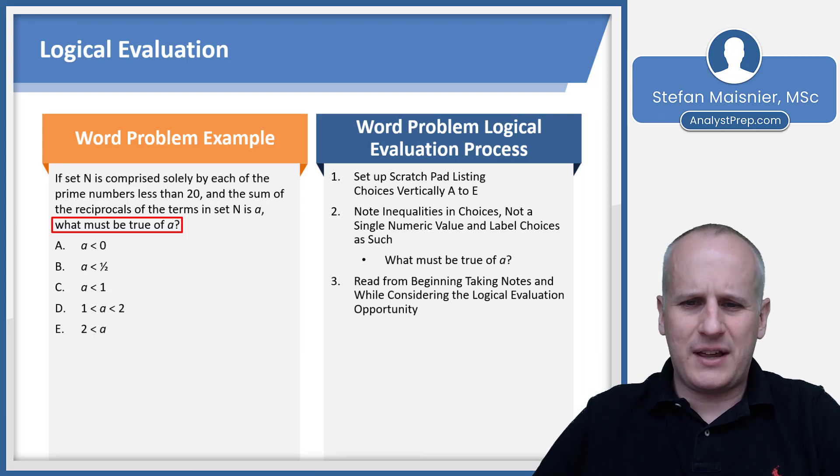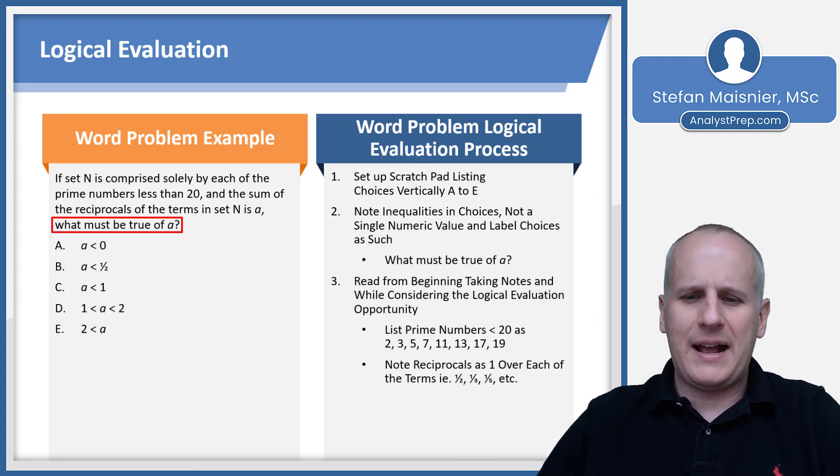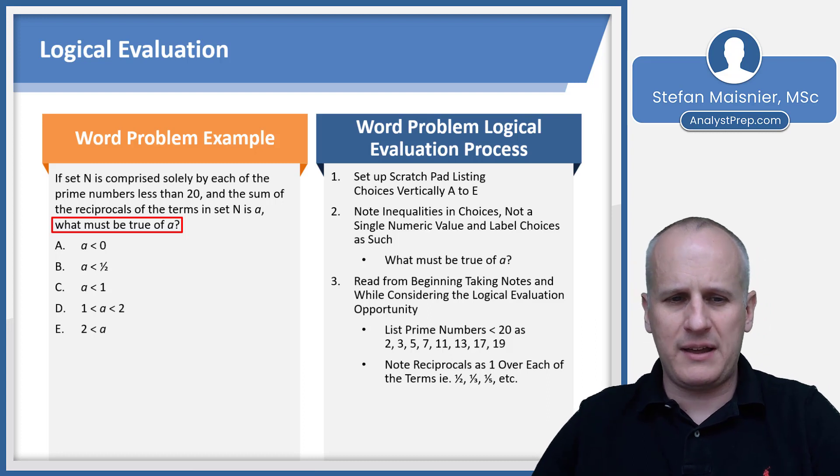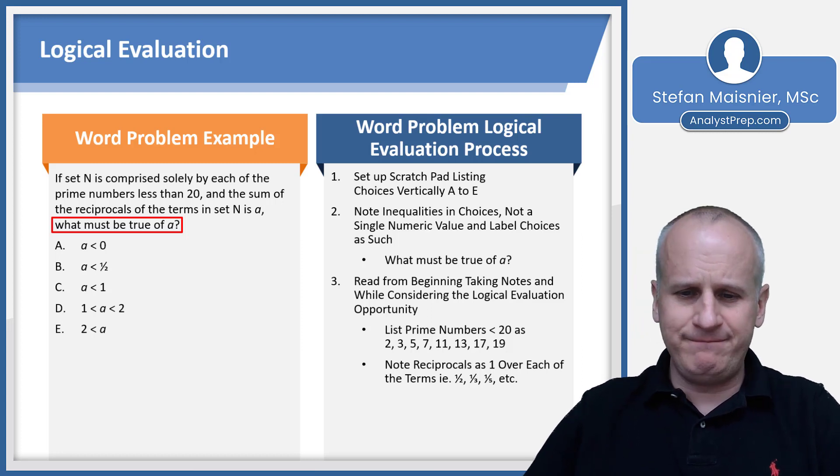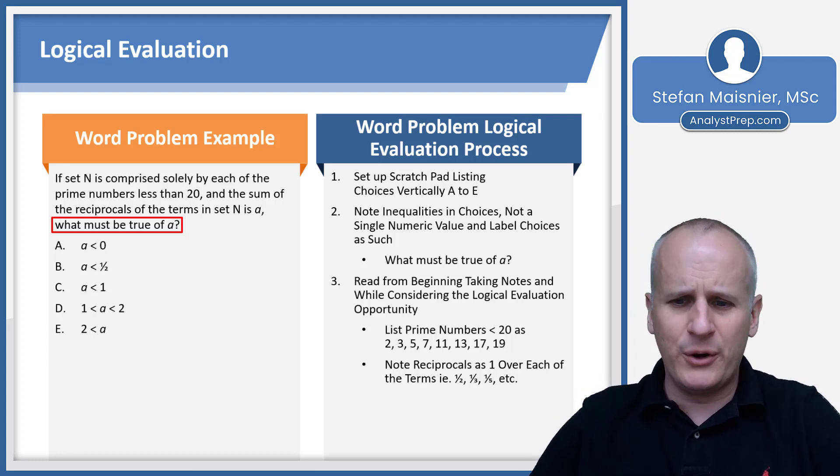So we read from the beginning, taking notes, while we consider the logical evaluation opportunity. We list the prime numbers less than 20: 2, 3, 5, 7, 11, 13, 17, and 19. If set N is comprised solely by each of the prime numbers less than 20, and the sum of the reciprocals of the terms in set N is A, what must be true of A? We know the reciprocals are going to be basically one over each of the terms, because a reciprocal times the value equals one. So the reciprocal of 2 is one half, the reciprocal of 3 is one third, the reciprocal of 5 is one fifth, et cetera.